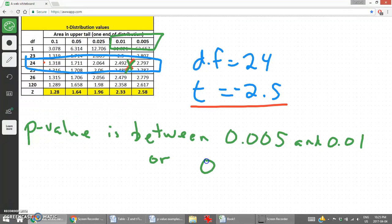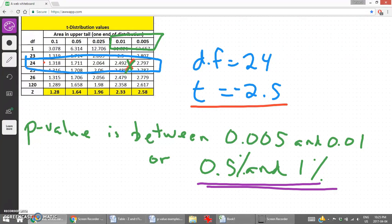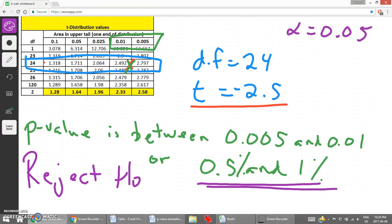So we move up to the top to the area in upper tail and it's going to be between 0.005 and 0.01. Or as a percent it would be between 0.5% and 1%. Remember our p-value decision rule is to reject the null hypothesis if the p-value somewhere in there is less than alpha. Alpha is still 5%. So in this case we are going to reject the null hypothesis. Once again, our p-value somewhere within that range is clearly less than 5%.